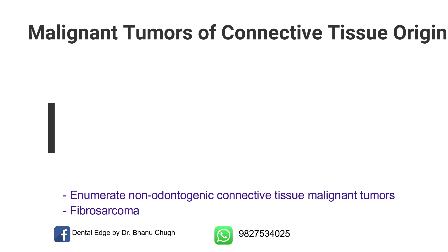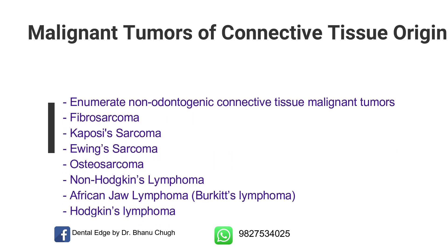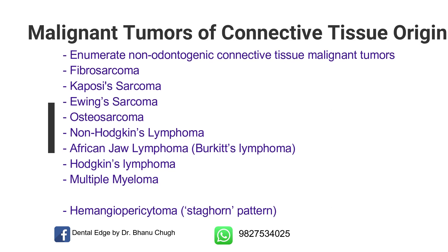Next, malignant tumors of connective tissue origin. In this: enumerate non-odontogenic connective tissue malignant tumors, fibrosarcoma, Kaposi's sarcoma, Ewing's sarcoma, osteosarcoma, non-Hodgkin's lymphoma, African jaw lymphoma or Burkitt's lymphoma, Hodgkin's lymphoma, and multiple myeloma. Hemangiopericytoma is not asked as a question but there can be an MCQ or fill in the blanks asking where you see the staghorn pattern — remember that the staghorn pattern is seen in hemangiopericytoma.